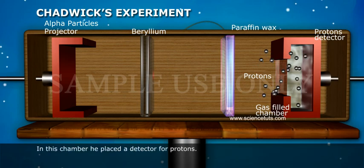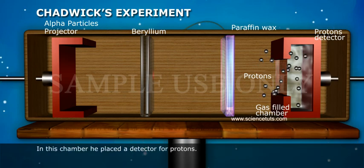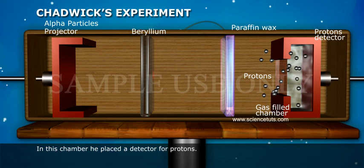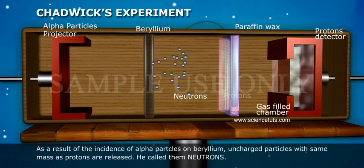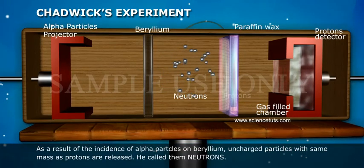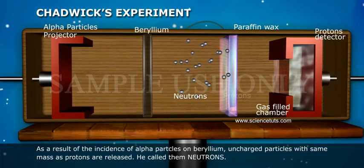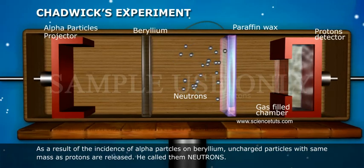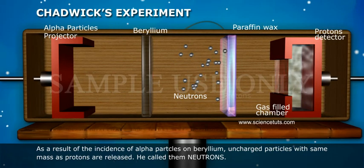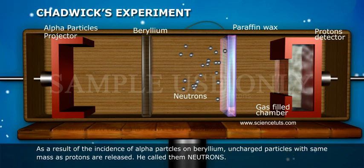In this chamber, he placed a detector for protons. As a result of the incidence of alpha particles on beryllium, uncharged particles with the same mass as protons are released. He called them neutrons.